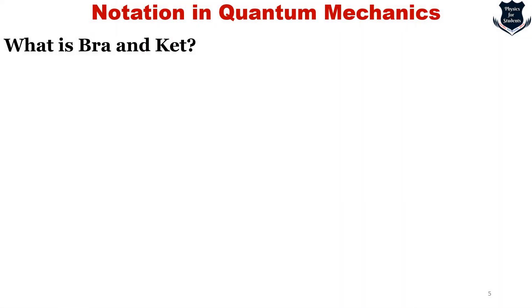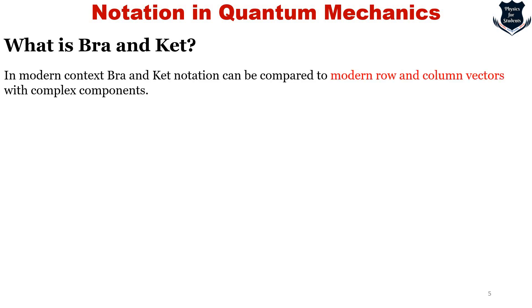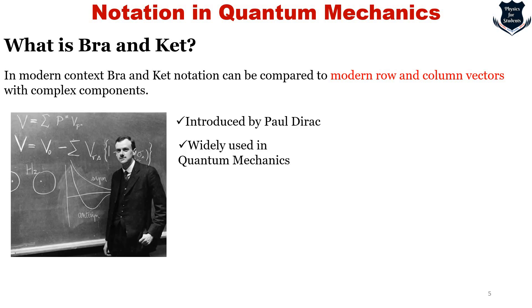So what is Bra and Ket? In modern context, Bra and Ket Notation can be compared to modern row and column vectors with complex components, as quantum physics deals with complex components. Matrix multiplication rules apply. It was founded by Paul Dirac and the notation uses angular brackets and vertical bars.